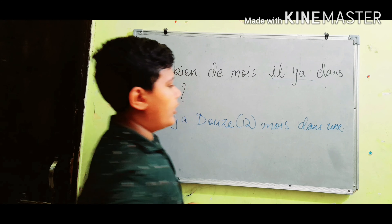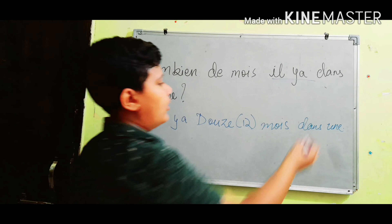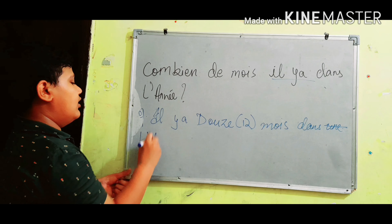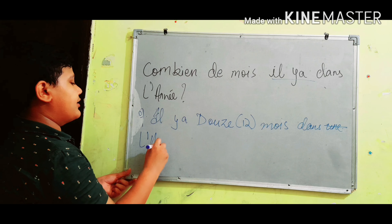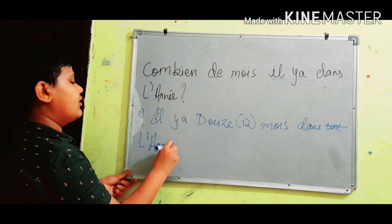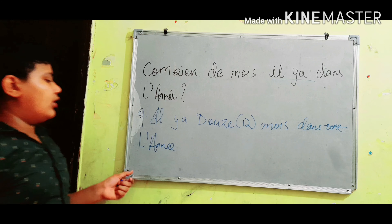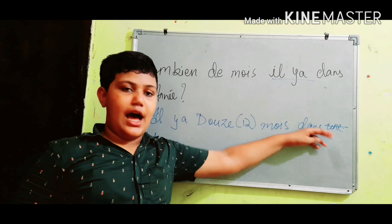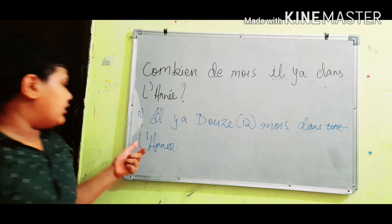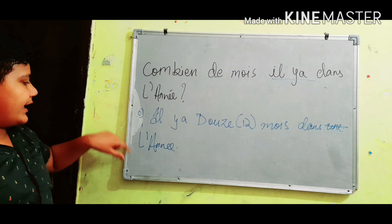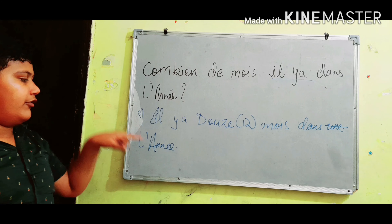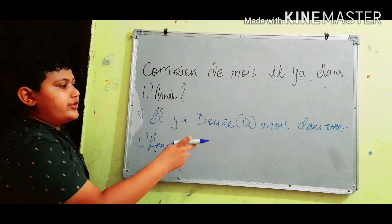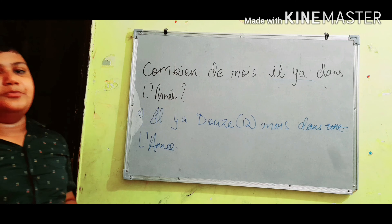You can also say: dans l'année. Because 'année' starts with a vowel, we are not putting 'un' or 'une' — we are putting l'apostrophe. There are 12 months in our year.